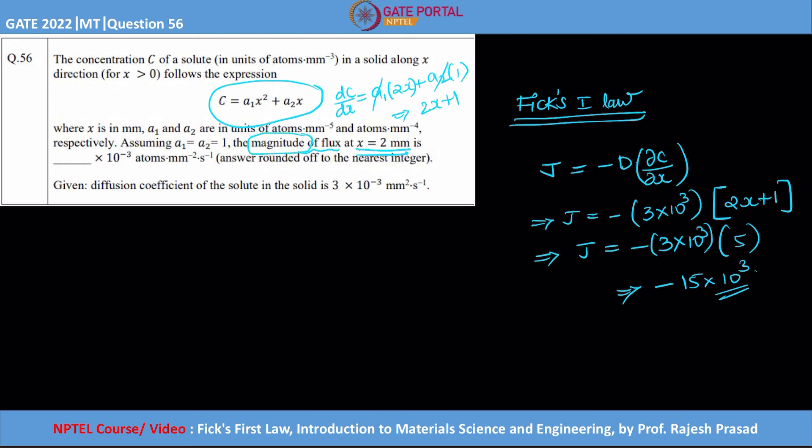And of course they are asking only the magnitude, and in these kind of integer questions it is important - if you want to get the magnitude, the negative sign does not make any sense. So the answer would be 15. Just by applying Fick's first law you can easily calculate the magnitude of the flux given that you know the diffusion coefficient and the concentration distance relationship.